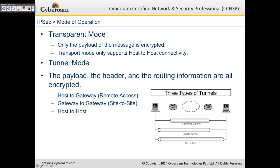There are two modes of operation in IPSec. The first is transport mode, where only the payload of the message is encrypted. Transport mode only supports host-to-host connectivity. As a result, transport mode is faster but offers a bit less security. In tunnel mode, it's more secure because the payload, header, and even the routing information are all encrypted, though it's a bit slower compared to transport mode.